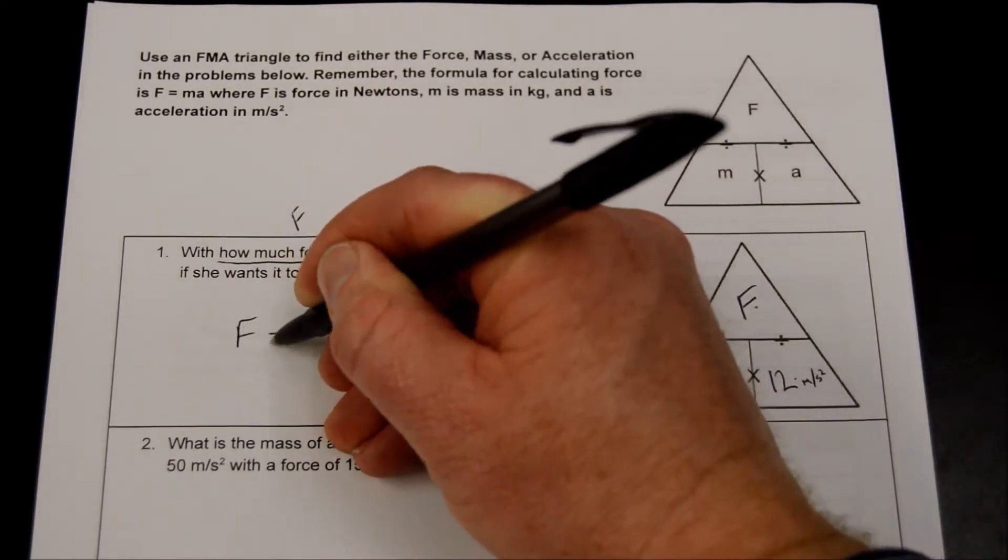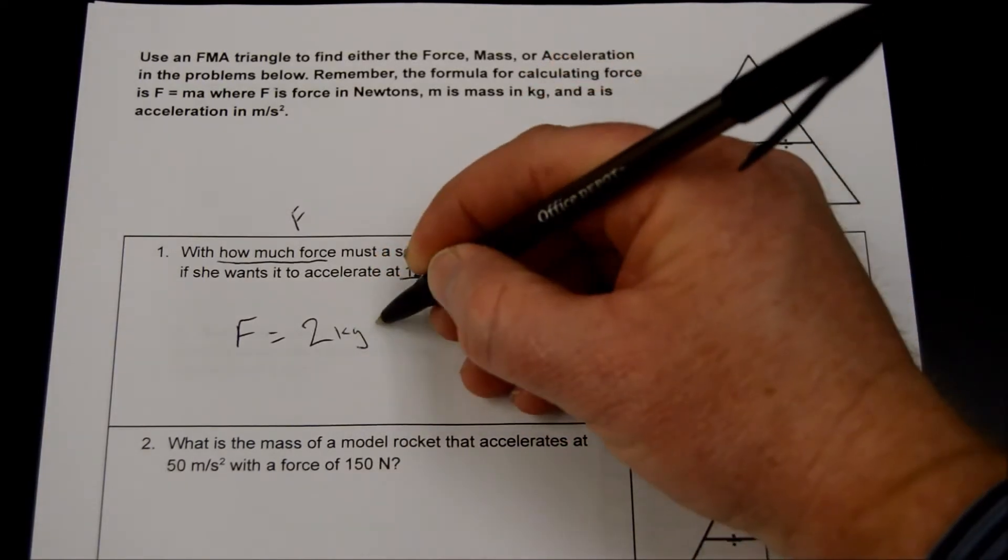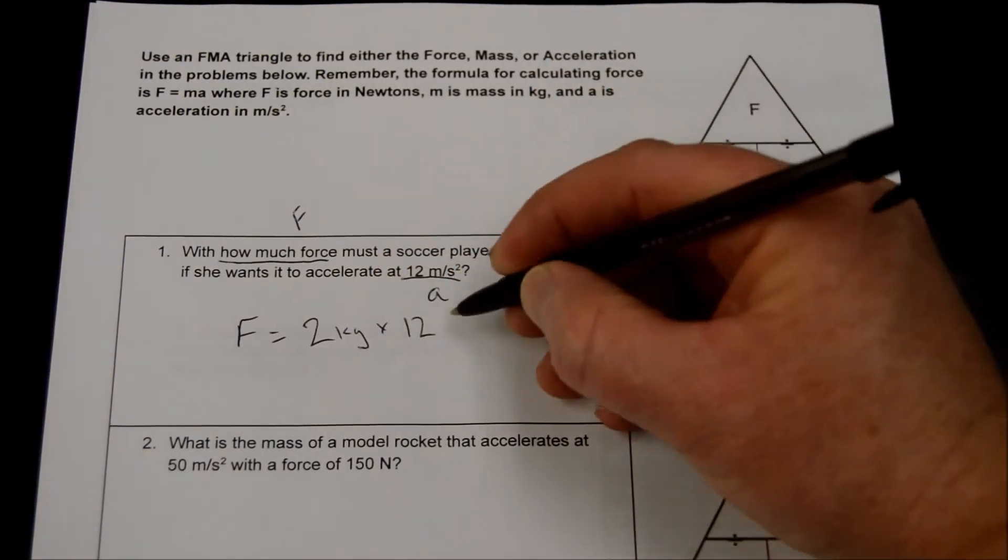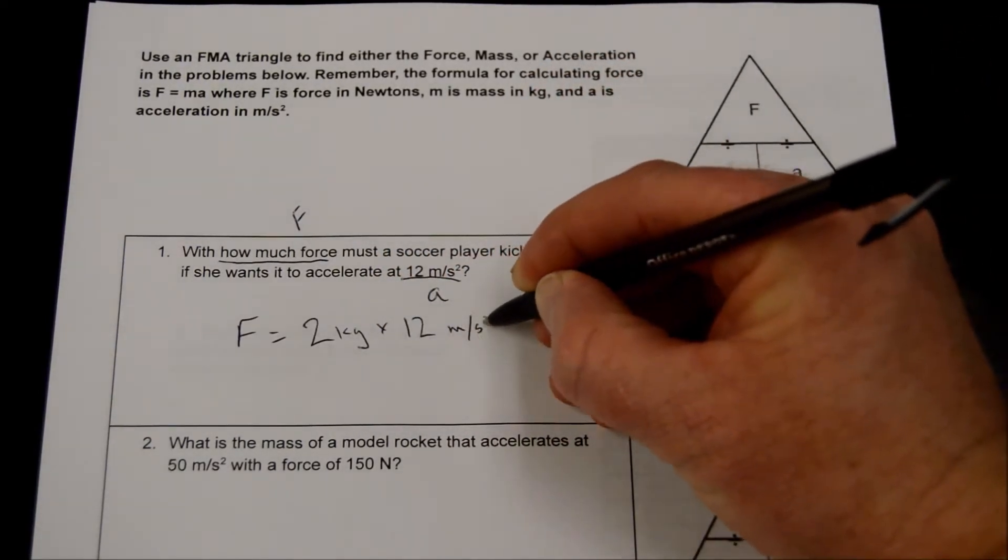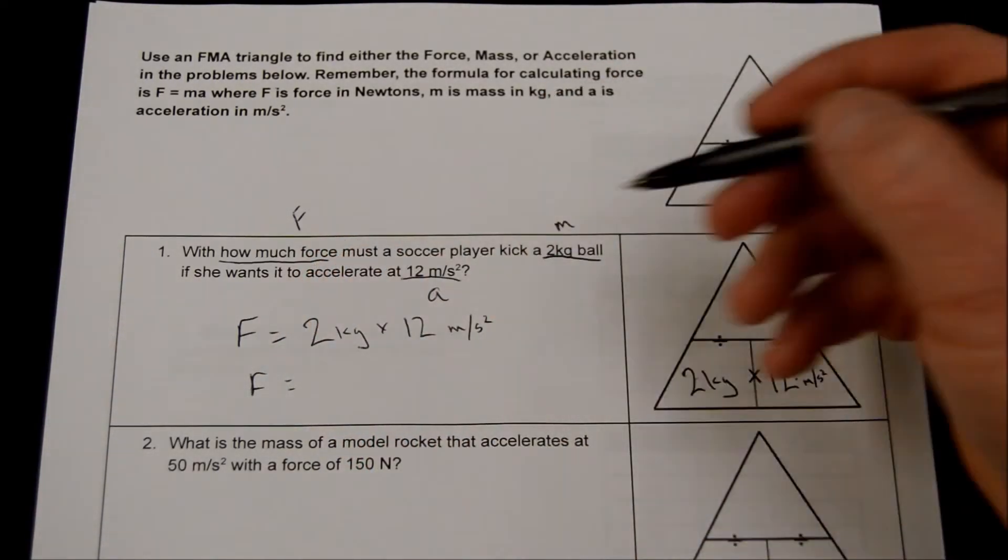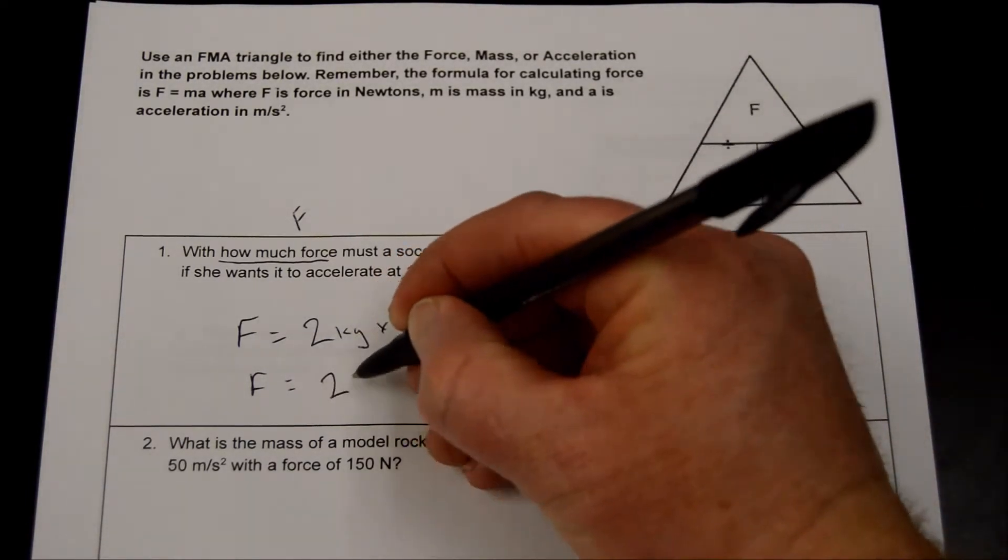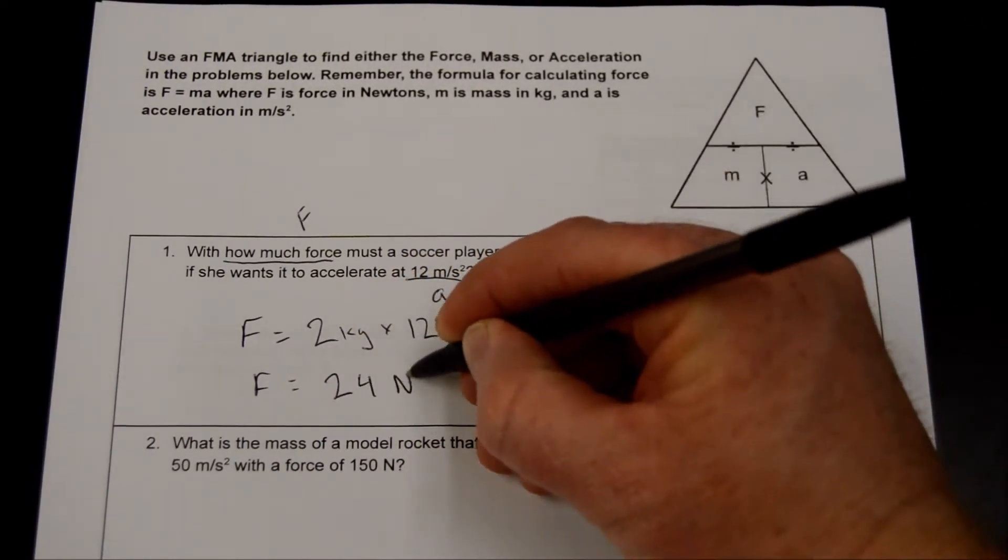I'm going to write that out. Force equals my mass is two kilograms times 12 meters per second squared is my acceleration. I'm not even going to do the math on this one. What's 2 times 12? That's 24. So the force is going to be 24 newtons.